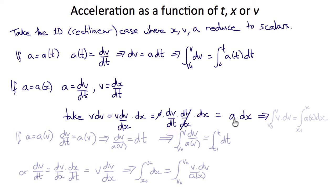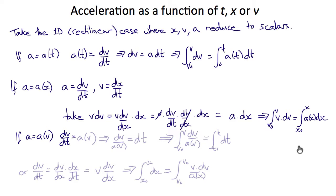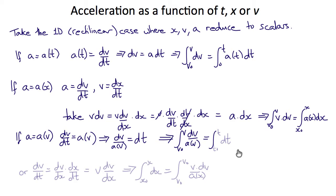Since dt/dx is 1/v, that cancels with v, leaving dv/dt = a dx. Integrating: the integral from v₀ to v of v dv equals the integral from x₀ to x of a(x) dx. This is the case when acceleration is a function of x. If acceleration is a function of v, we make use of dv/dt = a(v), which gives dv/a(v) = dt, and integrating gives the integral from v₀ to v of dv/a(v) equals the integral from t₀ to t of dt.